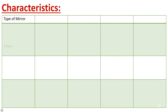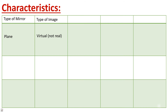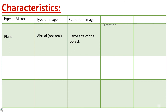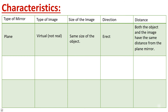Now, the characteristics of each type of mirror. For a plane mirror: the type of image is virtual — not real. The size of the image is the same size as the object. The direction is erect. And the distance: both the object and the image have the same distance from the plane mirror.